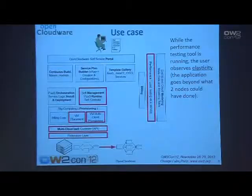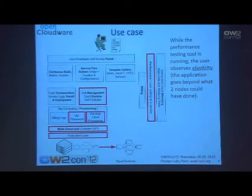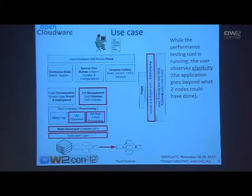While the performance test is running, the user can see that the original instance of the application, which had two nodes in the middle tier, now has a third node. That's another item we're working on — the self-management of the platform. Given the SLAs — for example, any middle tier node may not go beyond 80% CPU — if that threshold is exceeded, the platform will instantiate a new VM and create a third node. Through monitoring, the user can see that Open Cloudware has created a new node in order to cope with the load.